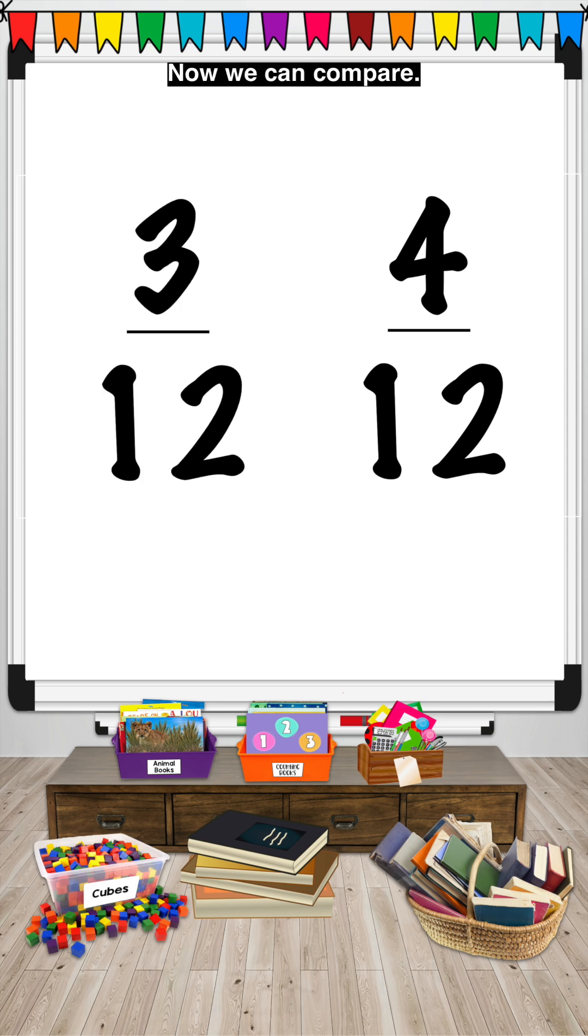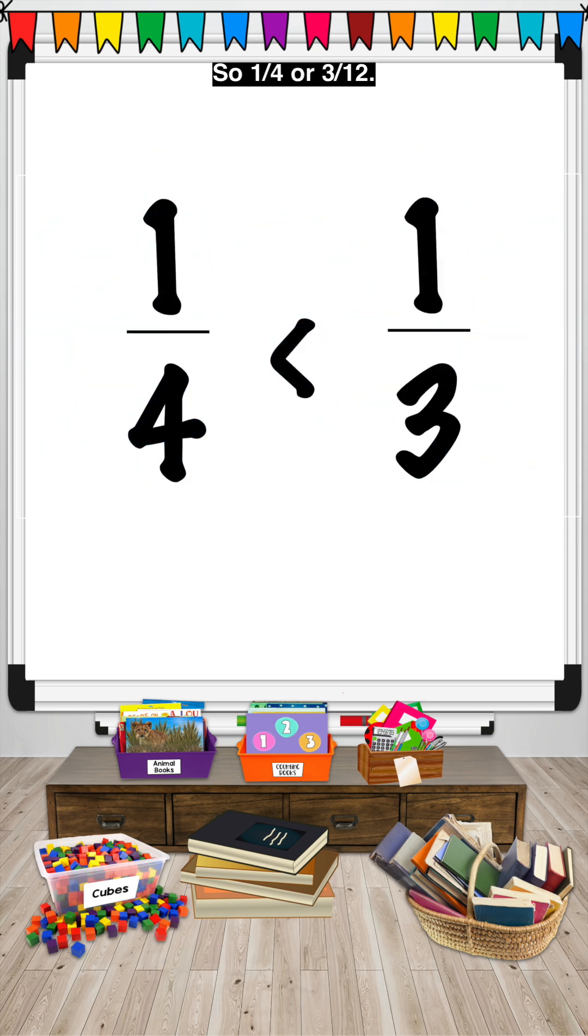Now we can compare. We look at the numerators. Three-twelfths, the same as one-fourth, is less than four-twelfths, the same as one-third. So one-fourth, or three-twelfths, is less than one-third, or four-twelfths.